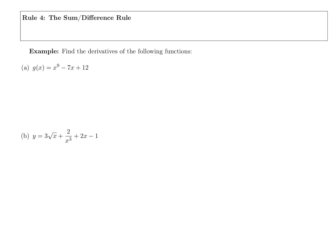For instance, if your original function has more than one term, let's call the first term f and the second term g. When you go to take the derivative y prime, make sure you take the derivative of that first term plus the derivative of that second term. It doesn't change anything, and this applies whether it's added or subtracted.